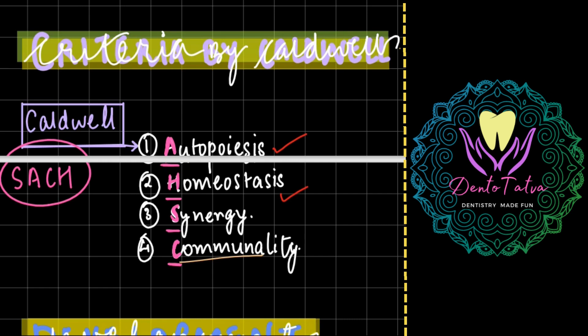They should be more effective when they are in association. So synergy should be there, and communality means they should respond to any kind of environmental changes as a unit and not as single individuals.